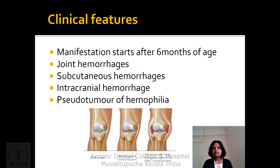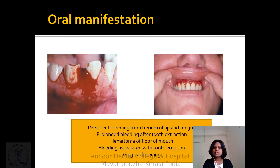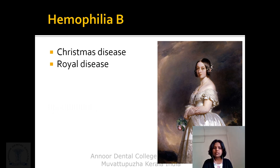Clinical features of hemophilia: manifestation starts after 6 months of age. Joint hemorrhages, subcutaneous hemorrhages, and intracranial hemorrhages can occur. Pseudotumor hemophilica can be seen in joints. Oral manifestations include persistent bleeding from the frenum of the lip and tongue, prolonged bleeding after tooth extraction, hematoma in the floor of the mouth, bleeding associated with tooth eruption, and gingival bleeding. Hemophilia B is also known as Christmas disease or royal disease, as it runs in royal families in European regions.